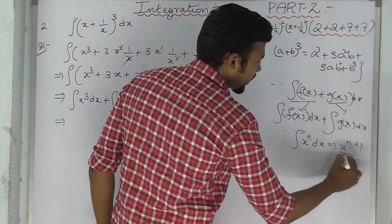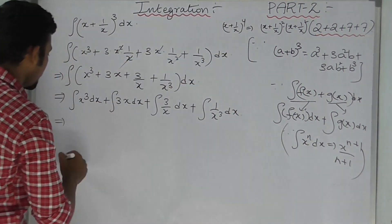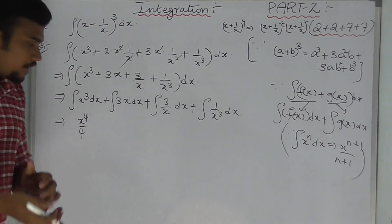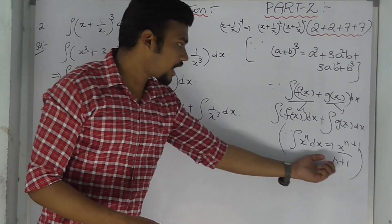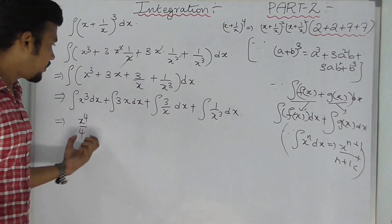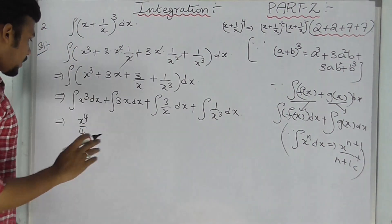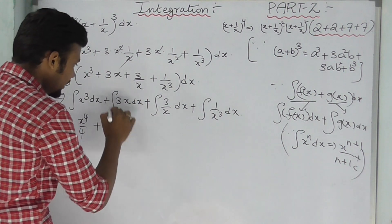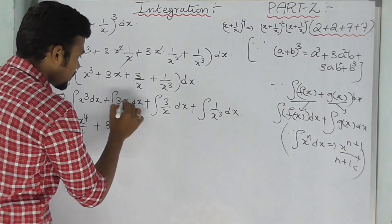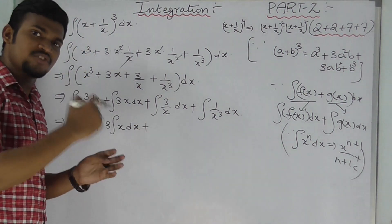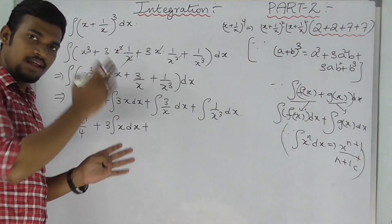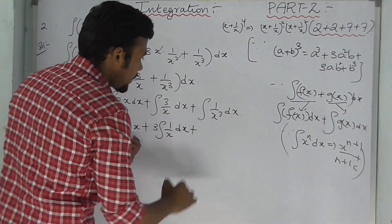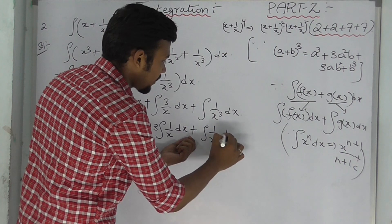The formula integral xⁿ dx = x^(n+1)/(n+1) + c. So for x³: x^4/4. For the constant 3 before the integral of x: 3 into x²/2. For 3/x: 3 times integral 1/x = 3 log x. We write each step clearly.